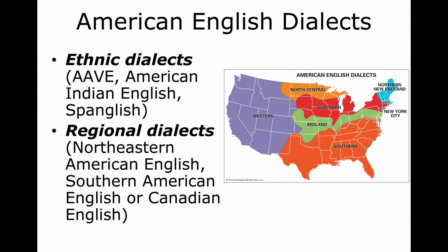Now the USA is a big and diverse country. Its population is estimated at more than 300 million people, and it is still growing. Such a big country formed by different groups of immigrants cannot have just one uniform language variety. Therefore, English spoken in its territory is divided into several dialects and accents. A few linguists use the criterion of ethnicity to classify some of them, and that's why we can identify African-American vernacular English and Spanglish, for example.